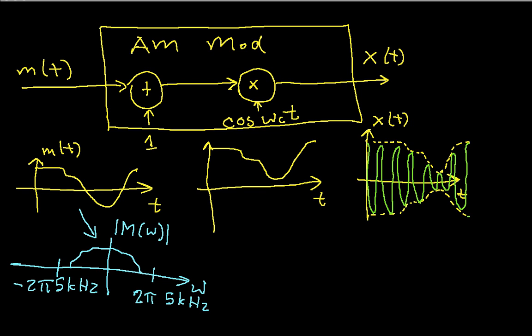When we add 1, then essentially all we add is a delta function at the origin of magnitude 1. So, by adding 1, I've just added this delta function.